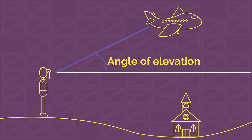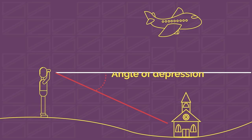Whereas, if you're looking down at an object, the angle between your horizontal sight line and the object is known as the angle of depression. Be careful to remember that this is the angle of depression and not this. It's a common mistake to make.